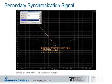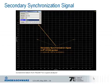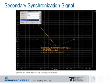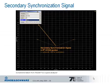Looking at the constellation diagram showing the secondary synchronization signal, we believe we see a pure BPSK modulation. In fact, the secondary synchronization signal is represented by an interleaved concatenation of two length-31 binary sequences. These two sequences are scrambled with a scrambling sequence depending on the physical layer identity transmitted with the primary synchronization signal. So, without finding the primary synchronization signal, the terminal cannot decode the secondary synchronization signal.